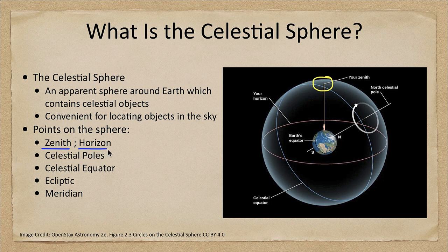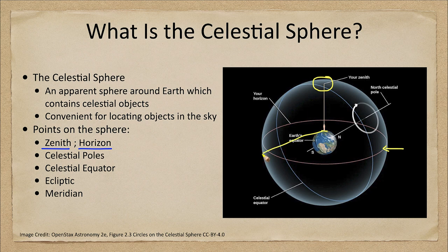Your horizon is right around the edge, shown here in the pink circle. For a person standing at this location, that would be the edge of what they could see. Anything below that would be invisible to them, being blocked by the Earth — the Earth would be in their way.